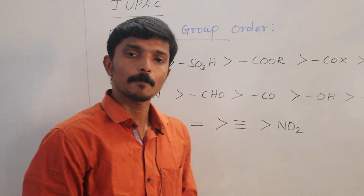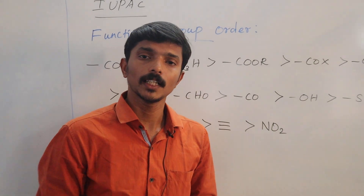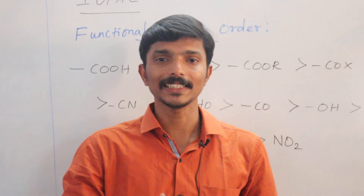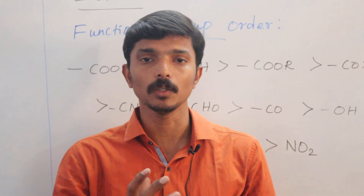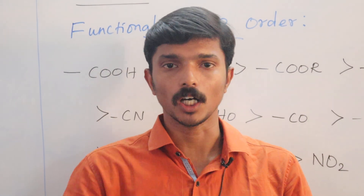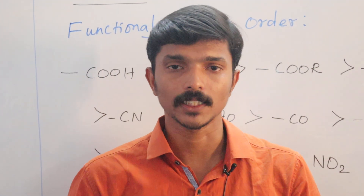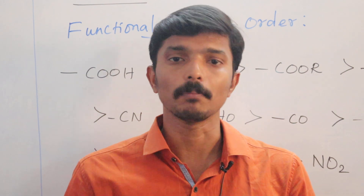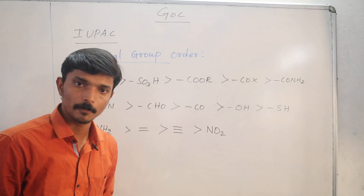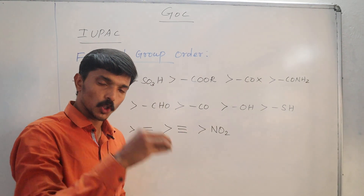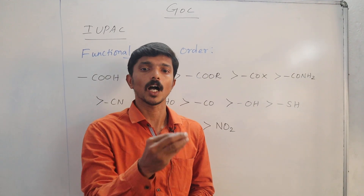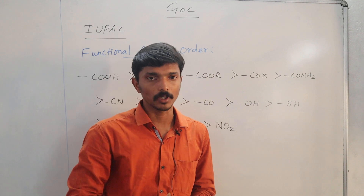Generally we have General Organic Chemistry, Hydrocarbons in 11th, then in 12th: Haloalkanes, Haloarenes, Alcohol, Phenol, Ethers, Aldehyde-Ketone, Carboxylic Acids, and Amines. Let's study these lessons. If you know the functional group in this compound, you will be able to name the organic compound.